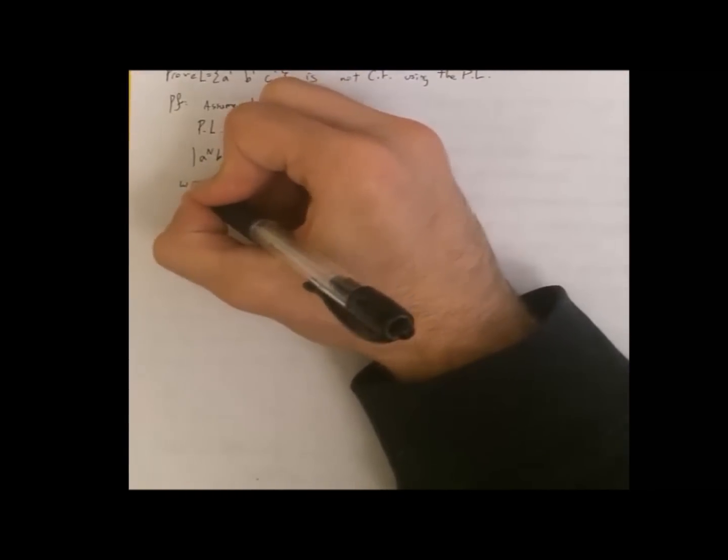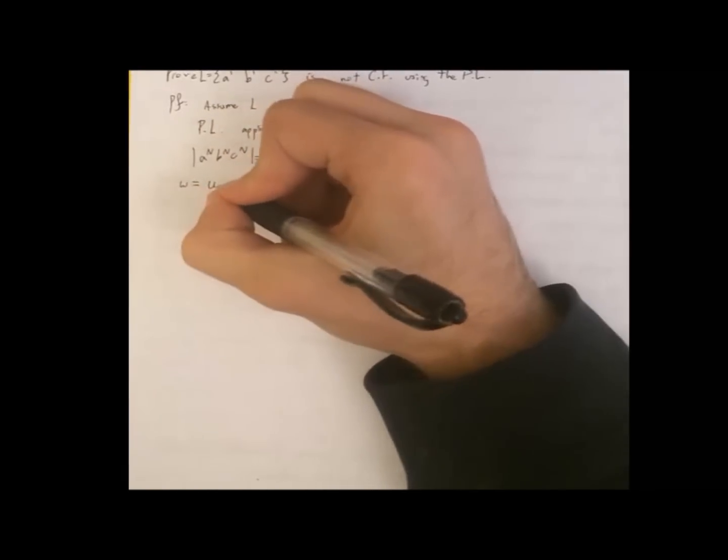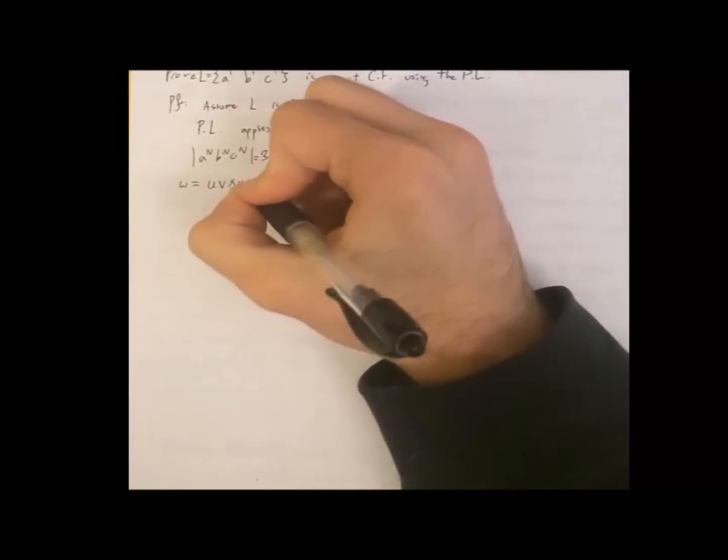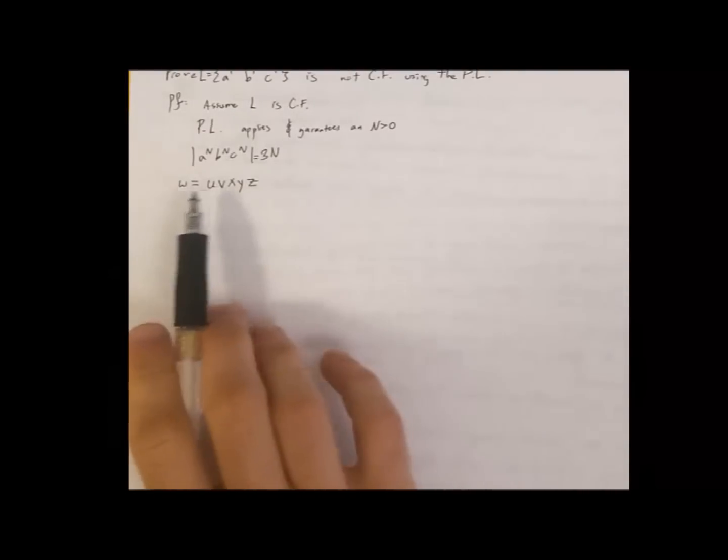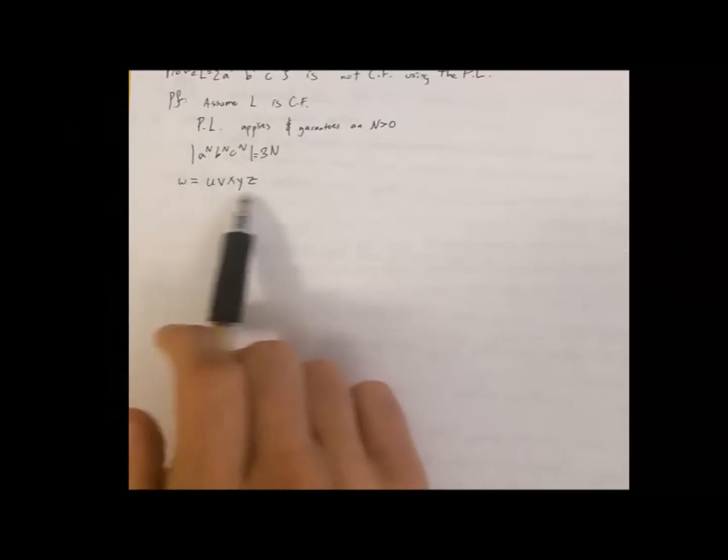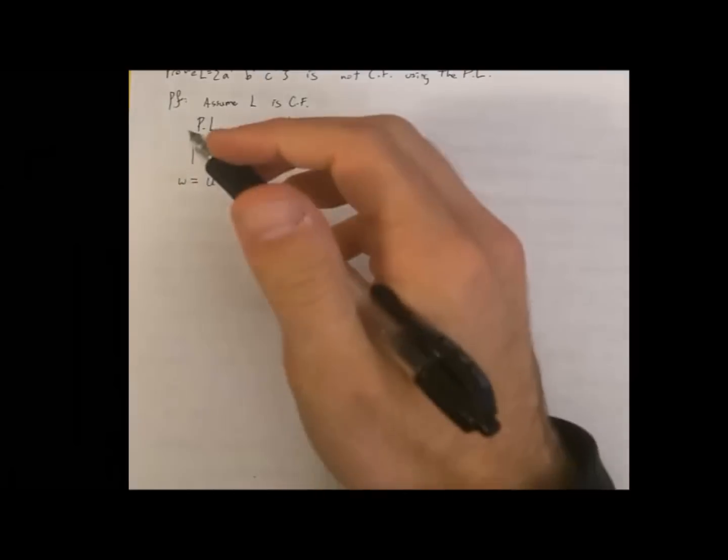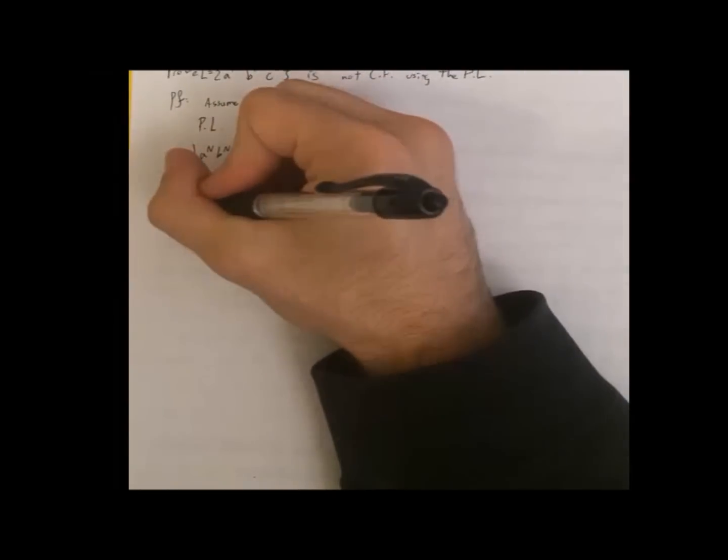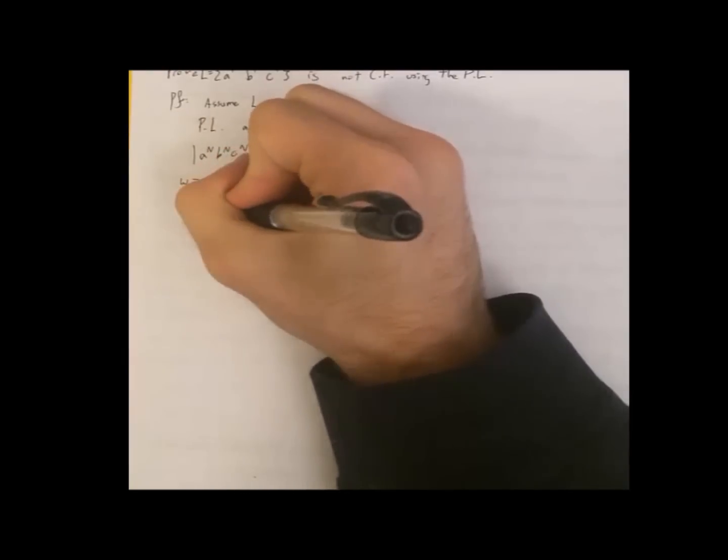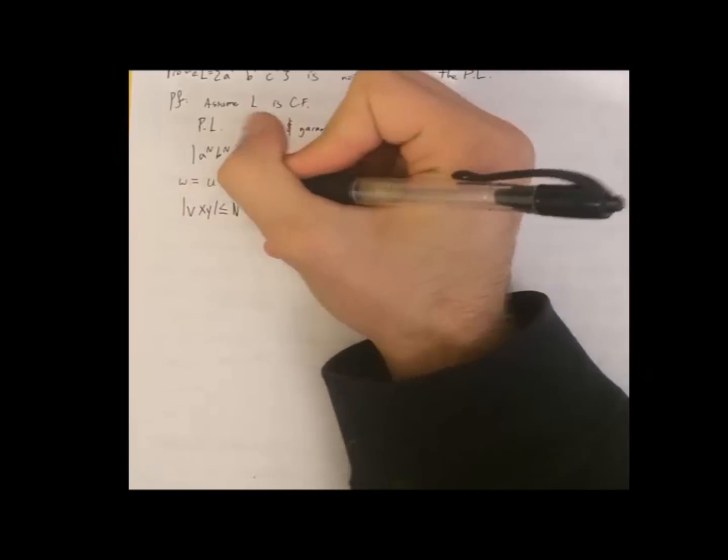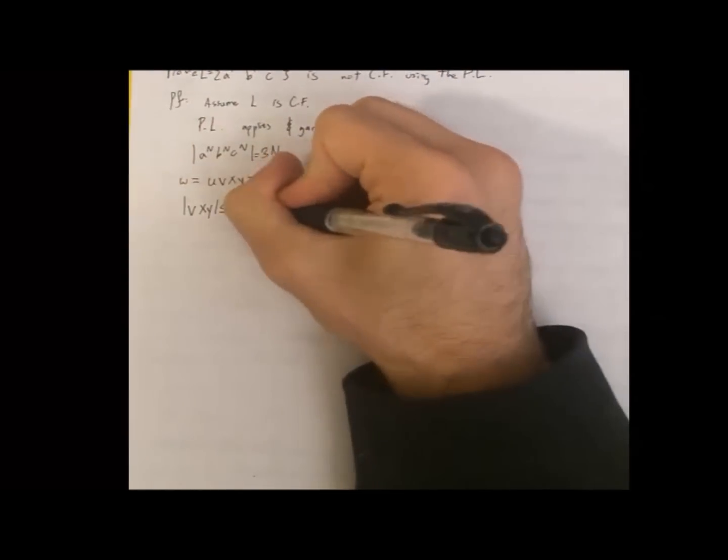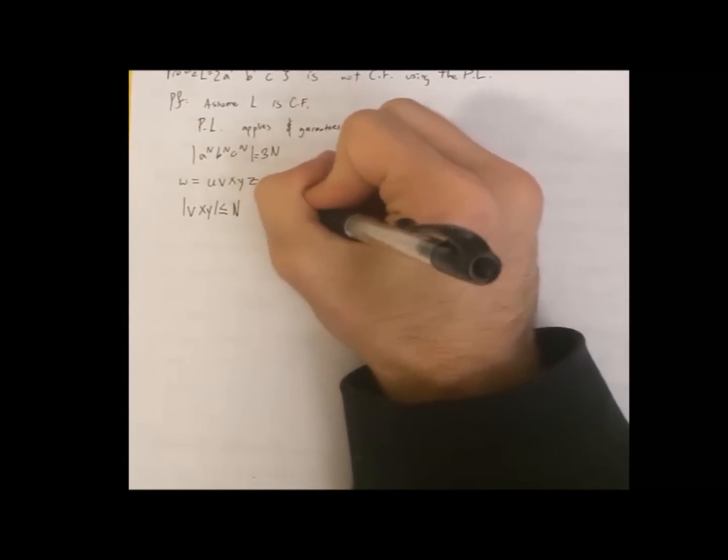The pumping lemma lets us split it into u, v, x, y, z. And this is the context-free pumping lemma. So when you're splitting a regular language, don't use this. This only applies for context-free pumping lemma split. Now, the pumping lemma tells us that vxy is less than or equal to n. And v, y is not zero.